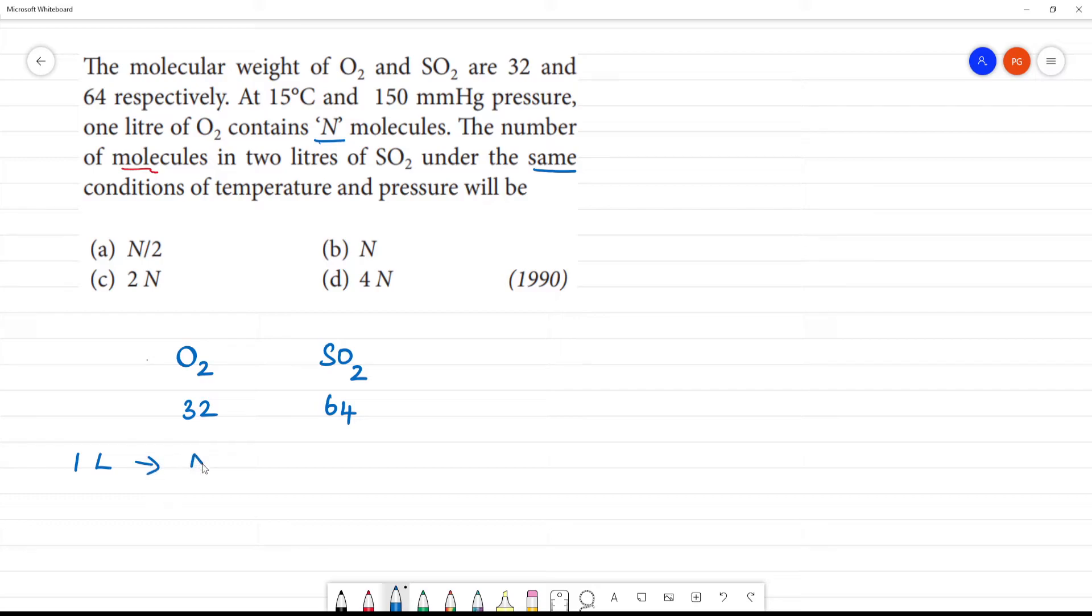contains N molecules. If it's N molecules, it's the same - there's no balancing involved. So 2 liters of O2 will contain 2N. This will be 2N.